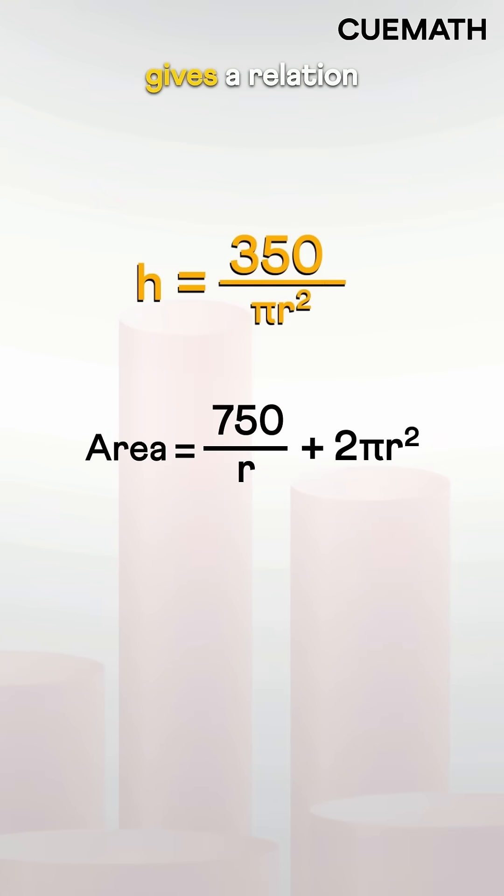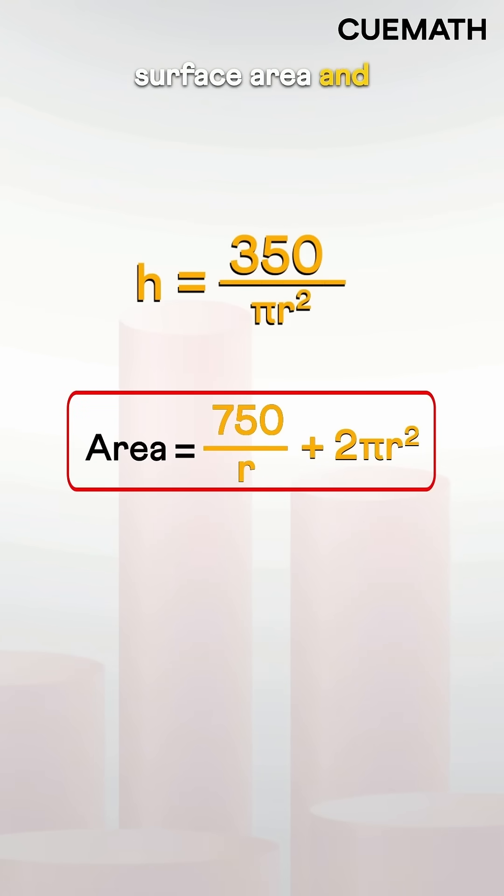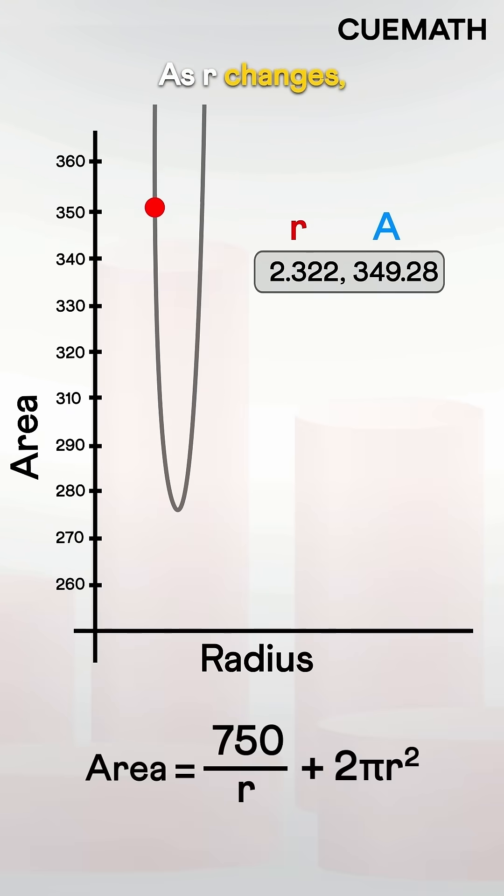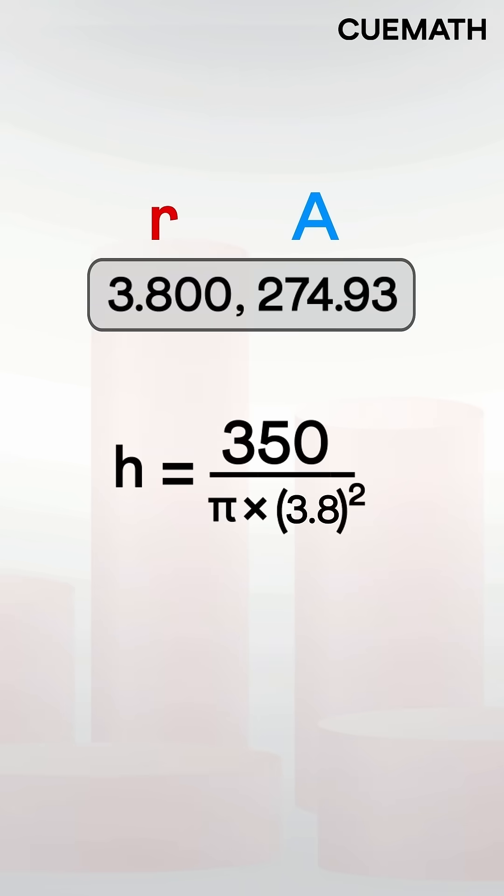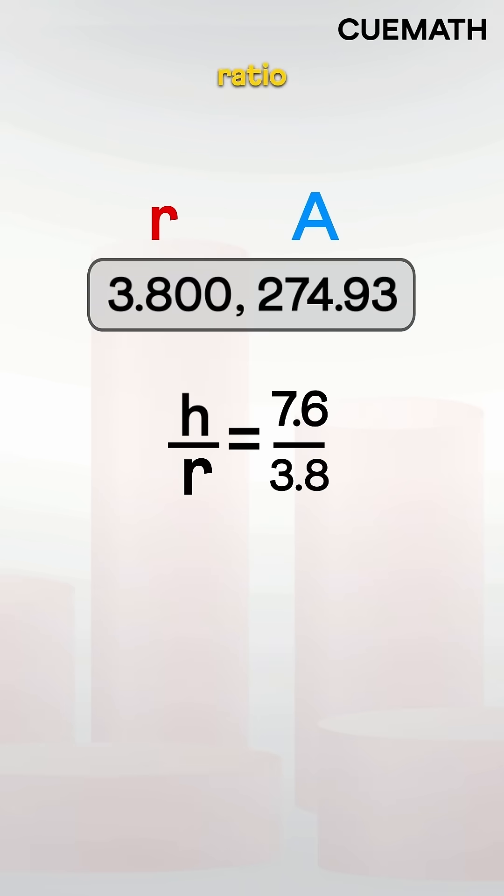Using this value and simplifying gives a relation between surface area and radius. As r changes, the surface area also changes. At a certain r, the surface area is minimum. This gives us the optimal radius and height.